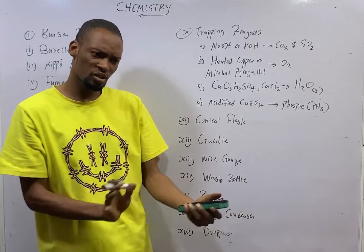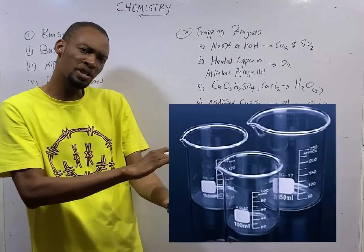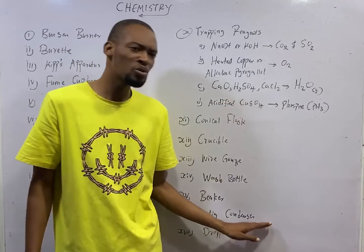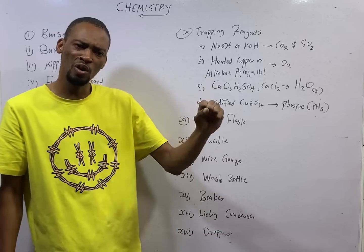Wash bottle. Wash bottle is used for dispensing small amounts of distilled water. Beaker is a liquid measuring instrument. You pour liquid in it, you measure the quantity. Liebig condenser is used to cool down hot vapor or liquids.